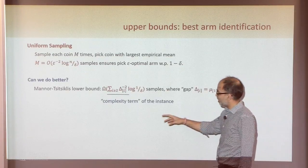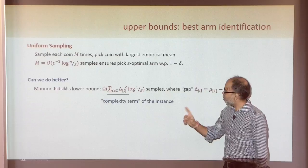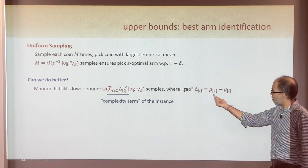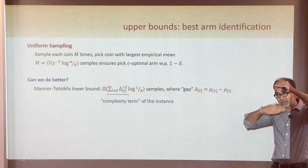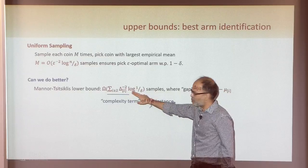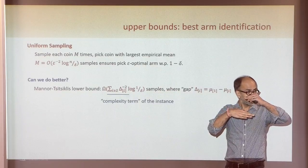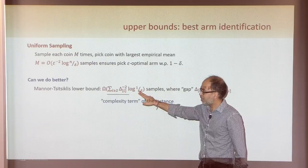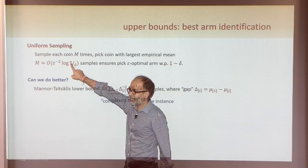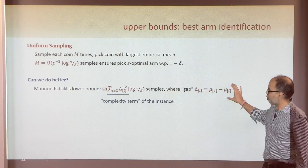Can you do better? There's a lower bound due to Mannor and Tsitsiklis and a bunch of other people. The lower bound is kind of nice — it depends on the gaps. If delta_i is the gap between the best arm and the i-th arm, then the lower bound is like 1 over delta_i squared times log(1/delta). If the gap between the best and second-best is epsilon, it's like (1/epsilon^2) log(1/delta) summed over all arms, so that's n. Apart from this little n, we seem to be tight.